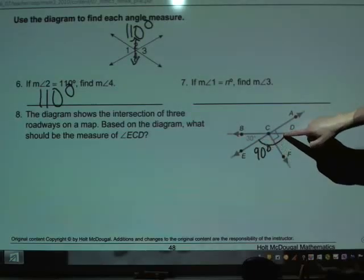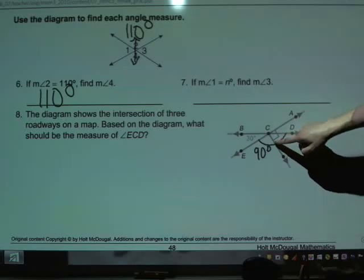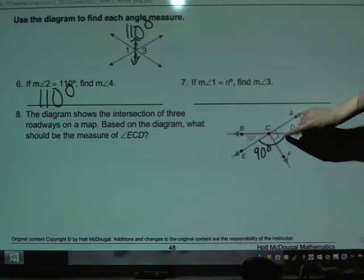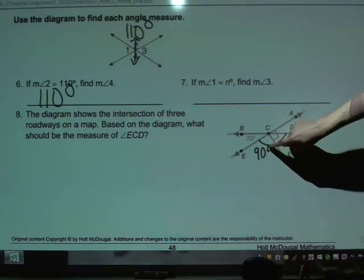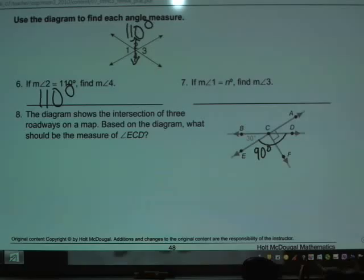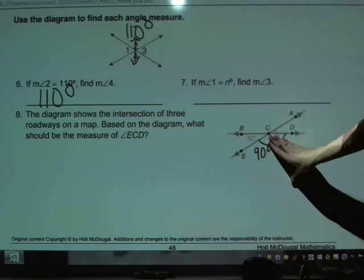but what we don't know is how big this chunk is here. We know that this larger chunk over here, because of the right angle mark, is 90 degrees. But we need to know how much this segment is in order to add it to the 90 we already have to come up with our answer. But let's just for a minute cover up this line towards the bottom here.